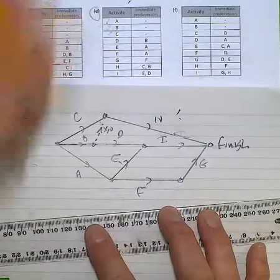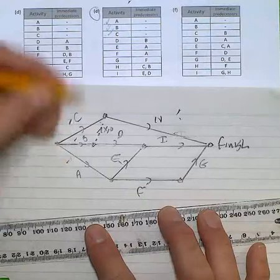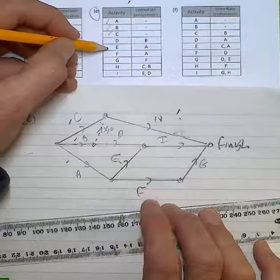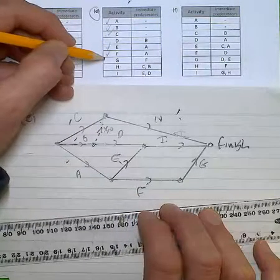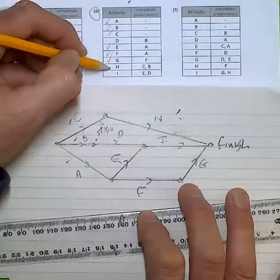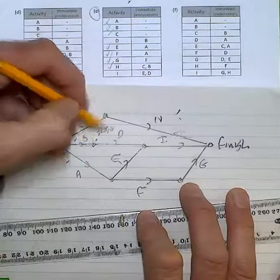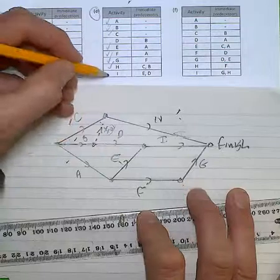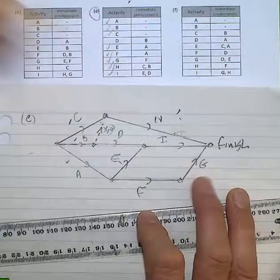A, B, and C kick things off. E requires A. F requires A. I've got that. G only requires F. H requires C and B. That's where we had to put that dummy edge in. And I requires E and D.